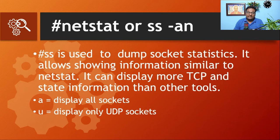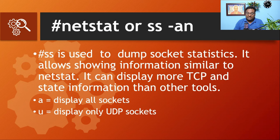The next command is netstat. However, netstat is already deprecated, so it is better to use the ss command instead. The ss command is used to dump socket statistics. It displays information similar to netstat but can show more TCP and state information. The flag -a displays all sockets, and -u displays only UDP sockets.